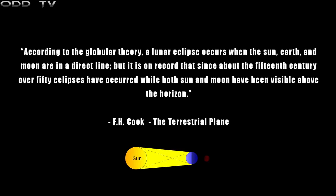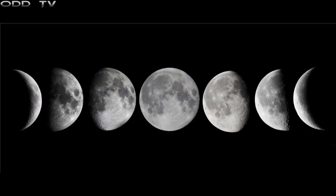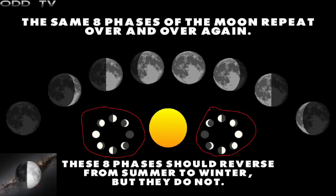According to the globular theory, a lunar eclipse occurs when the Sun, Earth, and Moon are in a direct line. But it is on record that since about the 15th century, over 50 eclipses have occurred while both the Sun and Moon are visible above the horizon. It's a common misconception that the shadow of the Earth causes moon phases — even mainstream scientists readily admit this fact. The interesting thing about moon phases is that they are always the exact same 8 phases repeated. But if we were circling around the Sun, these 8 phases would inevitably be reversed from the summer to winter seasons. Where did he get that diagram? It's just flat out wrong. All of those moons should have the same side illuminated by the Sun, but for some reason they're being lit from different angles. Regardless of your point around the Sun, the parts of the moon being illuminated shouldn't be any different.